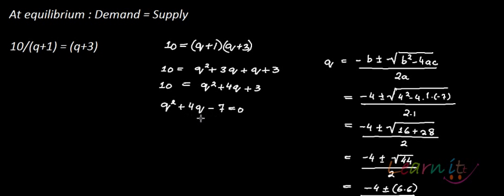It's not easy to factorize this, so we will use the discriminant formula. Q is found using the quadratic formula: Q = (−B ± √(B²−4AC)) / 2A. Here B = 4, A = 1, and C = −7.